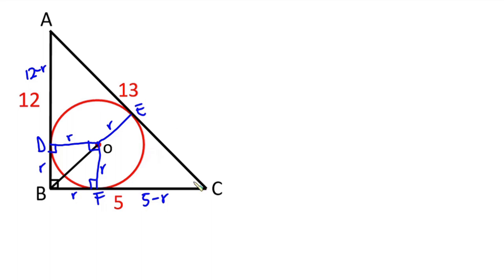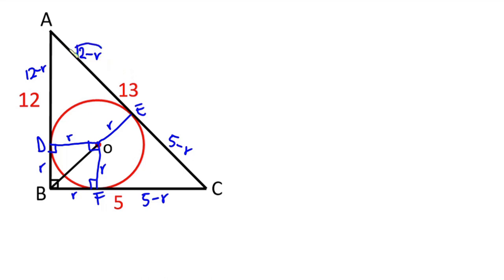So the external point C means the length of this tangent is the same as the length of this tangent, so this side CF will also be 5 minus R. Likewise, for external point A, the length of AD is the same as the length of AE, so AE is also 12 minus R.